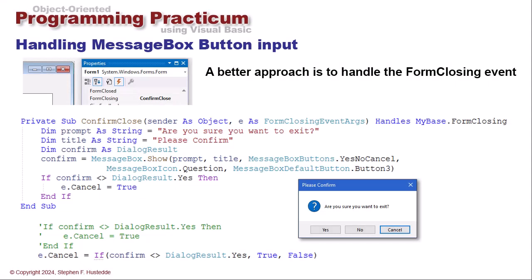Here I think is a better way to verify that the user wants to exit the application. That is to handle the form's form closing event. So in the events panel for the form for form closing, I entered confirm close as my method and then coded that basically the same way we did before. I have a prompt and a title.